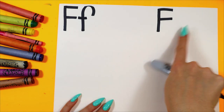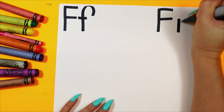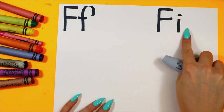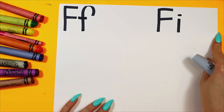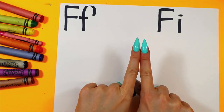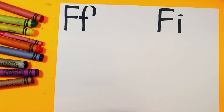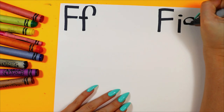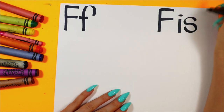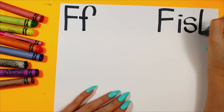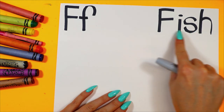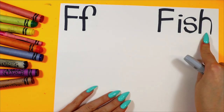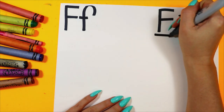Fuh, ih, ih — oh yeah, it's an I. Fuh, ih, shh. Fish. I hear a shh at the end. Fuh, ih, shh. What two letters when we put them together make a shh sound? Yes — S and H. Fuh, ih, shh. Fish. Fish starts with the letter F. F for fish.